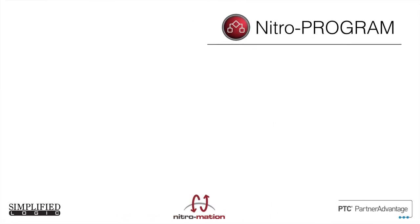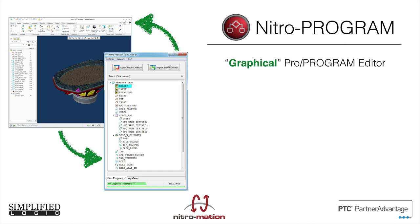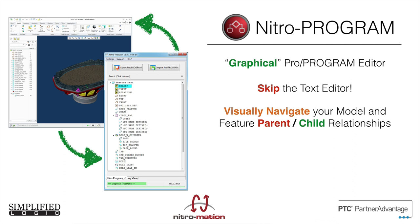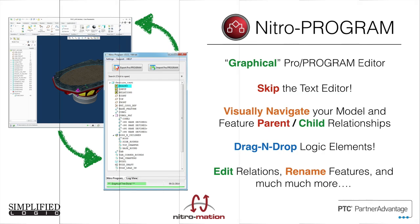Nitroprogram is another tool that we've created that is specifically focused on ProPrograms. It is a graphical ProProgram editor. It allows you to skip the text editor completely and visually navigate your model and feature parent-child relationships. Everything relative to the logic is drag and drop, so if you can see an if statement or an else statement, you can drag it and move it to wherever you want to go, and it'll work. You can also use this to edit relations, rename features, and do a lot of other cool stuff.